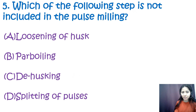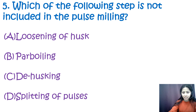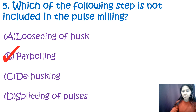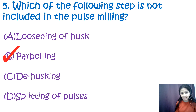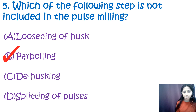Question 5: Which of the following is NOT included in pulse milling? Options are loosening of husk, parboiling, dehusking, and splitting of pulses. The correct option is B — parboiling. The major steps in pulse milling are loosening of the husk, dehusking, and splitting. Parboiling is a process commonly associated with rice milling, not pulse milling.